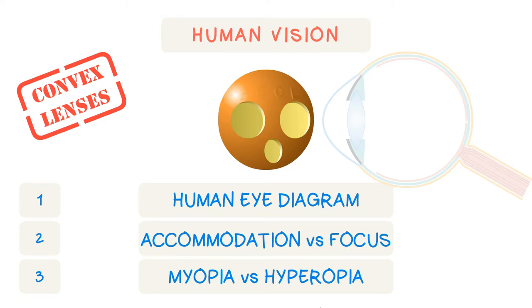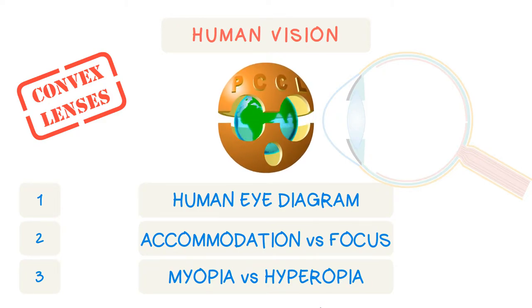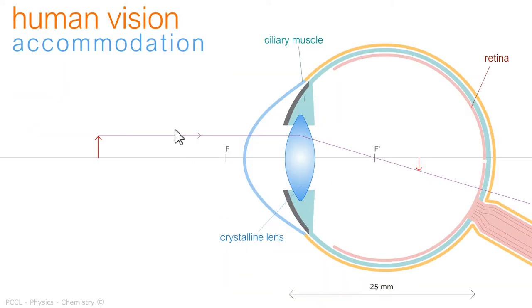Hello, ECCL channel greets you. If the eye model is proposed in the chapters on converging lenses, it is because the crystalline lens is a convex one.